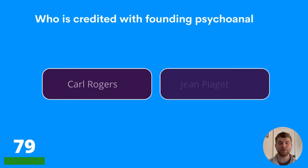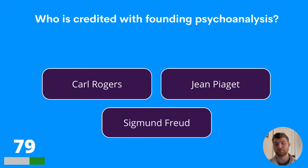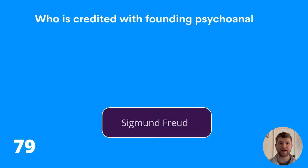Question seventy-nine: who is credited with founding psychoanalysis? Carl Rogers, Jean Piaget, or Sigmund Freud? The correct answer is Sigmund Freud.